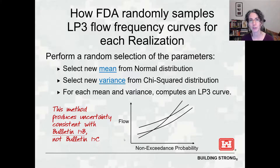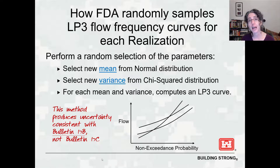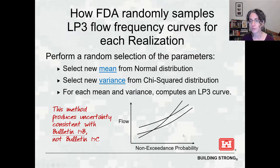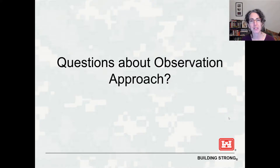This method produces uncertainty consistent with Bulletin 17b, which did not consider uncertainty in skew — and is not yet consistent with Bulletin 17c, which does consider uncertainty in skew. A future version of FDA will instead re-estimate the LP3 frequency curves using the approach of randomly sampling from the entered distribution and refitting a new curve with a new mean, standard deviation, and skew, making it consistent with Bulletin 17c. That is the observation approach, or flow frequency analysis approach. If you have questions, please go to the Discourse site. In the next video we'll move on to the hydrologic modeling approach.